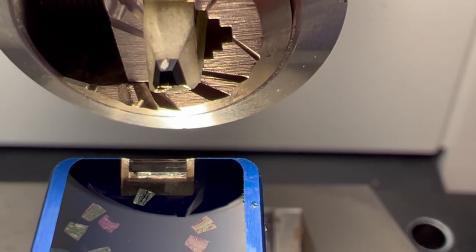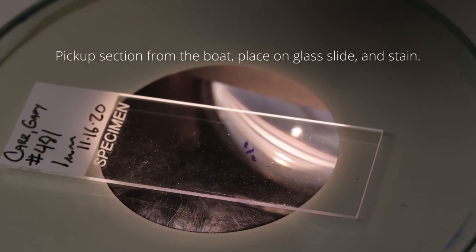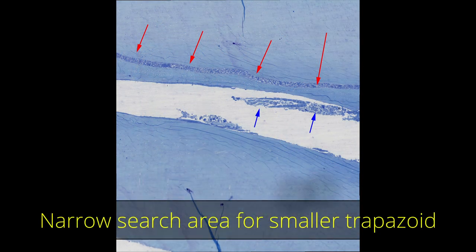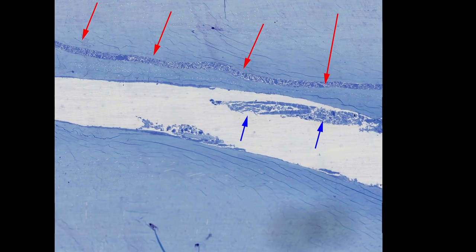Here I am creating the larger specimen sizes. Those are the green sections. Then I take those sections, place them on a glass slide, stain them with toluidine blue, and then create a narrow search area.